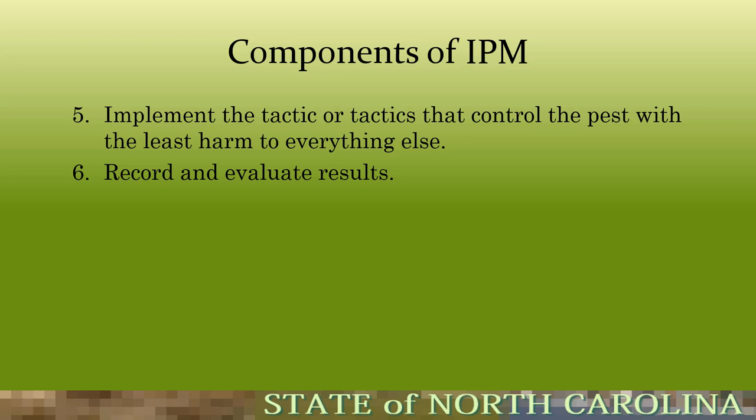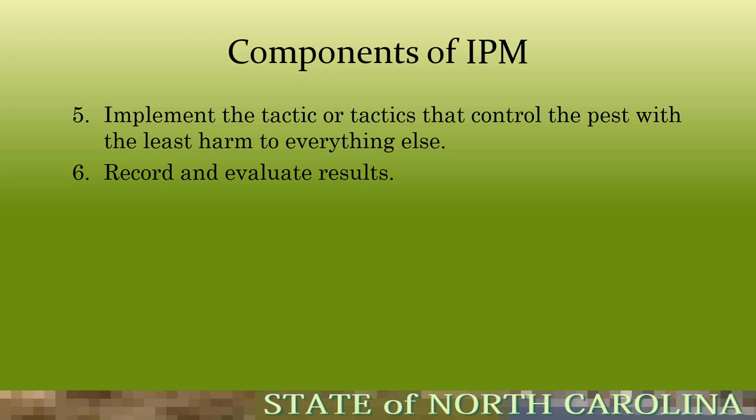Sixth, record and evaluate your results. Document what works, when you saw the pest, what you did, the time of year, time of day, and temperature — all of this is available on your phone. Write it all down, keep a notebook, or type it up and email it to yourself. You need to know what's happening when you are implementing an integrated pest management plan for a client.